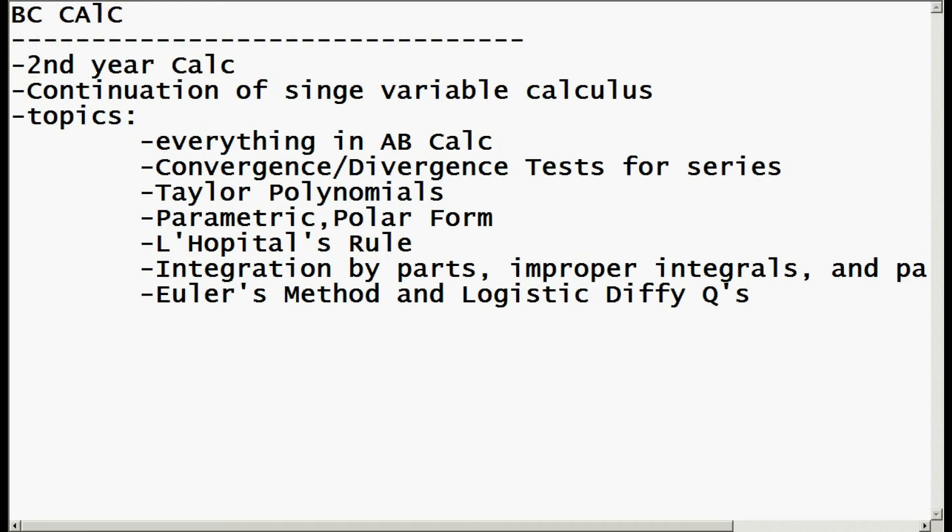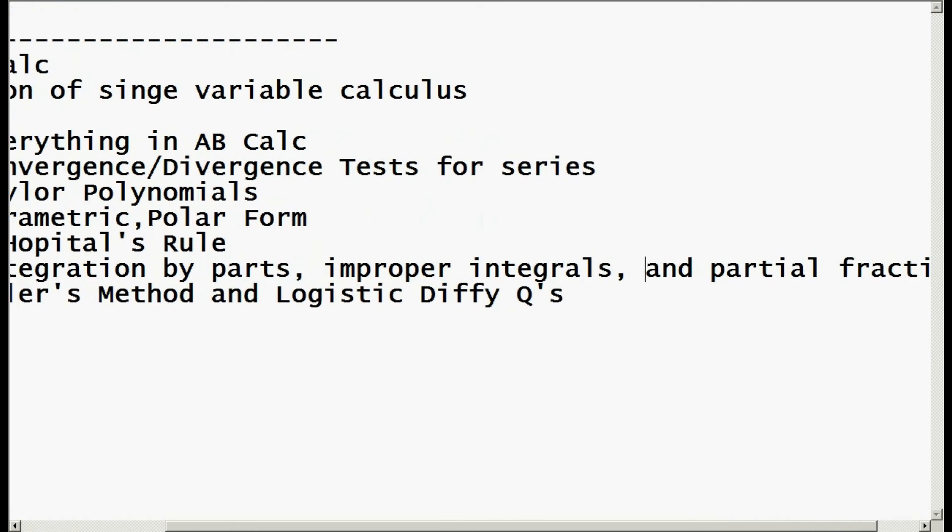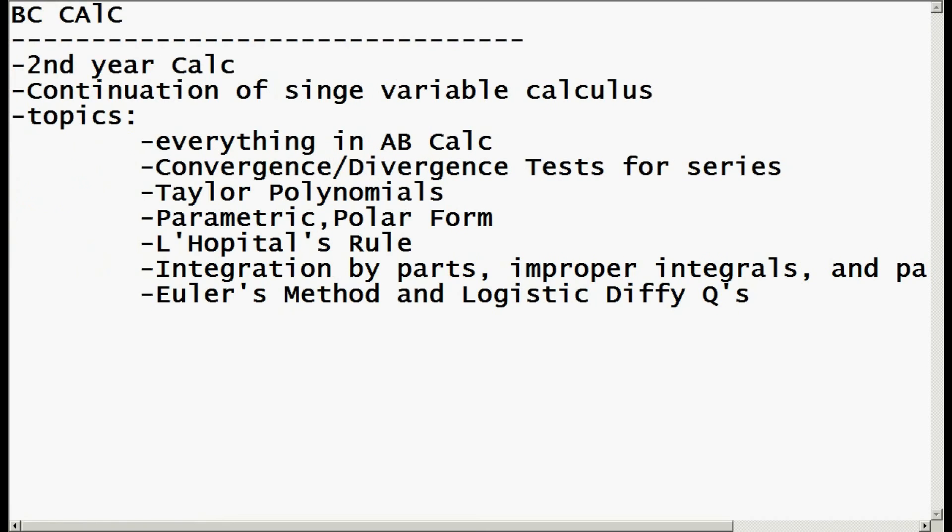In addition to everything from AB Calculus, BC Calculus also includes convergence and divergence tests for series, Taylor polynomials as well as Maclaurin polynomials, parametric and polar form, L'Hopital's rule, integration by parts, improper integrals and partial fractions, as well as Euler's method and logistic differential equations.